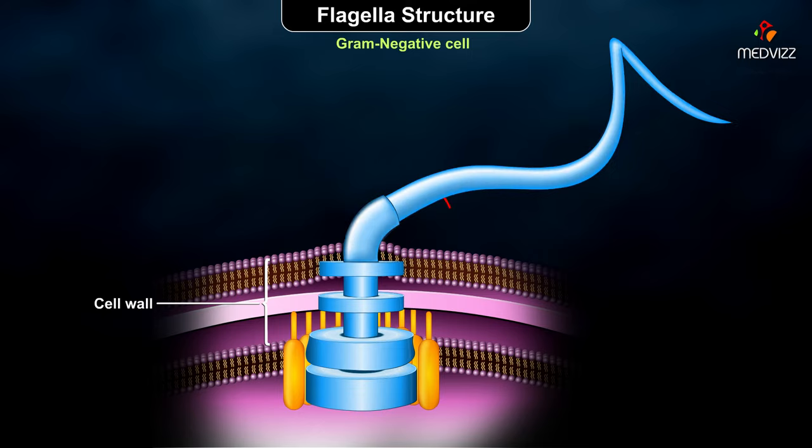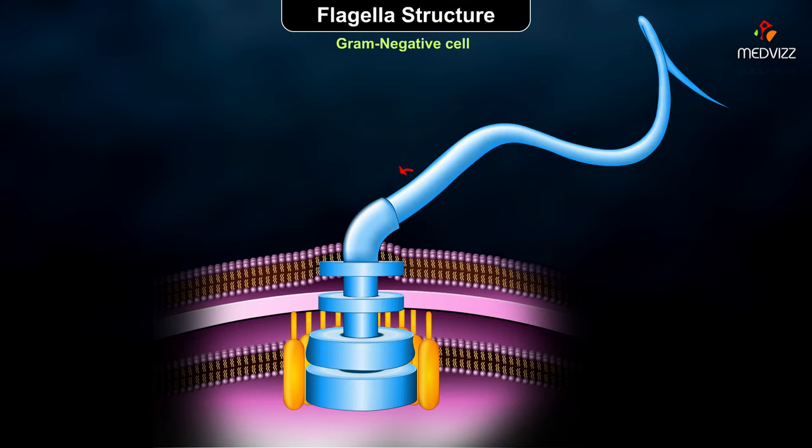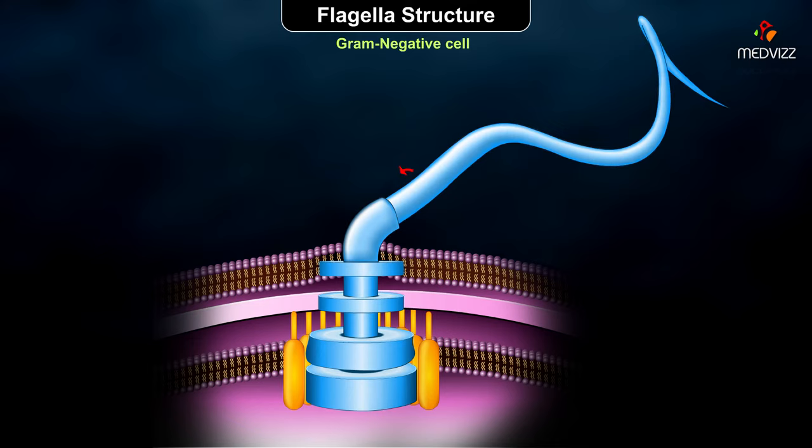You're viewing a flagellum from a gram-negative cell. A gram-positive cell would only have two rings in its basal body, both of which are attached to the plasma membrane.